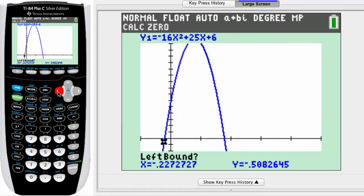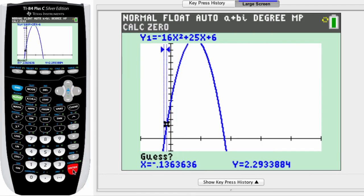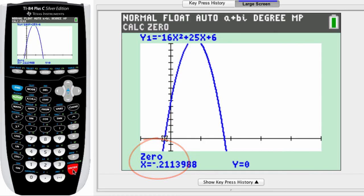Notice that the left bound is going to be just below the x-axis here. Hit enter, and scoot it up. A couple clicks, there we go. And hit enter again, and enter a third time, and there is the other x-intercept.